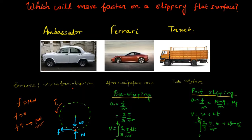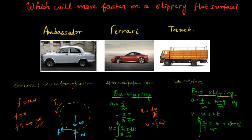For the velocity, since acceleration is increasing with torque (not constant), we use the integral form: velocity equals the integral from 0 to t of acceleration dt. So velocity is (2/3) × integral of (τ/mr) dt from 0 to t. The key takeaway is that pre-slipping, velocity is a function of torque integrated over time.